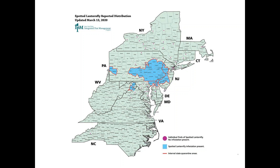Spotted Lanternfly is also confirmed in New Jersey, Delaware, parts of Maryland, Virginia, and West Virginia. Pink dots on the map show where it was found but authorities went in, scouted, and could not find an established infestation. There's one dot in Massachusetts where one was intercepted. Please be watching for it and keep checking this website as things change. This map also reflects quarantines being enforced by the respective Departments of Agriculture.